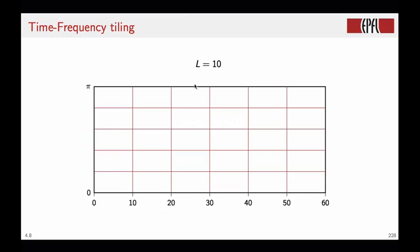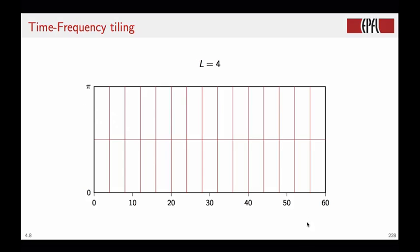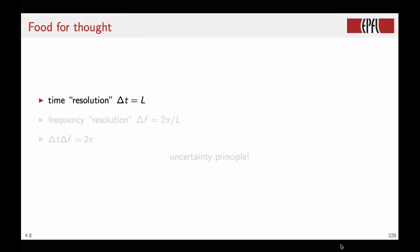If we change the size of the window, suppose we take L equal to 10, then we narrow the size of the tile in the time axis, but we widen the size of the tile in the frequency axis. So, although the shape of the tiles change, the number of tiles remains the same because the area of each tile remains constant. Similarly, if we shorten the window even more, we have a different arrangement of the tiles, but the size of each tile remains the same. This is actually quite self-evident. If the time resolution is L, the frequency resolution is 2 pi over L, and therefore the product, namely the area of each tile, is the constant 2 pi.